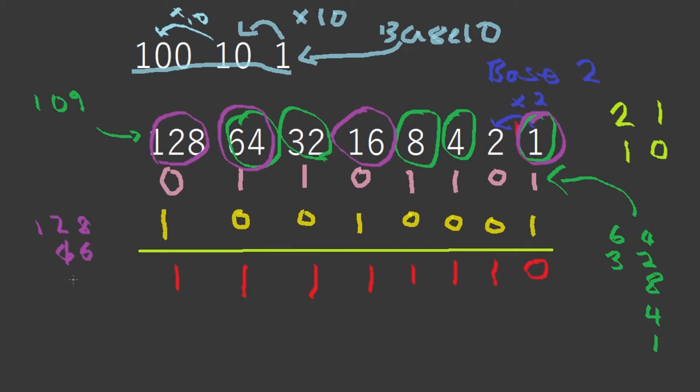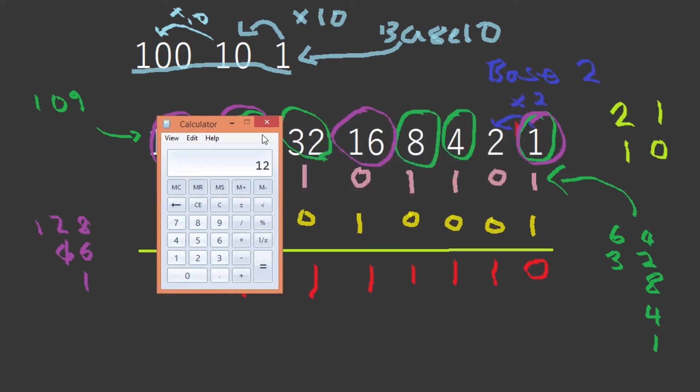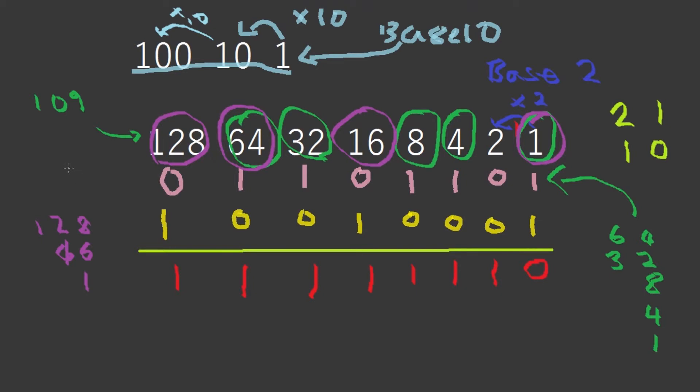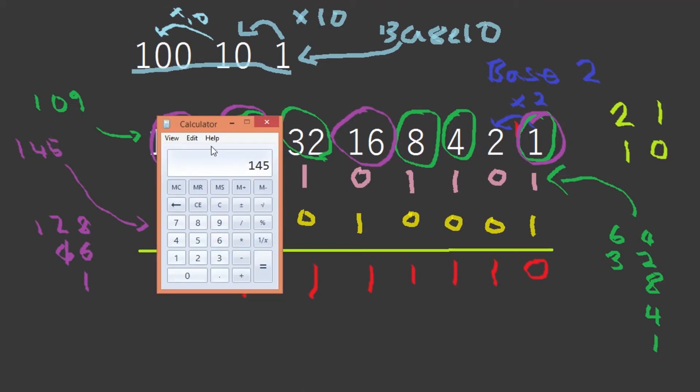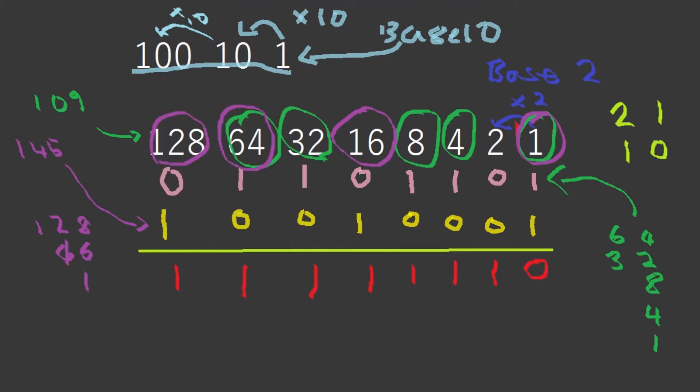So what's that? 128 plus 16 plus 1 is 145. So this is 145. So let's add these together in our normal way. 109 plus 145 equals 254.